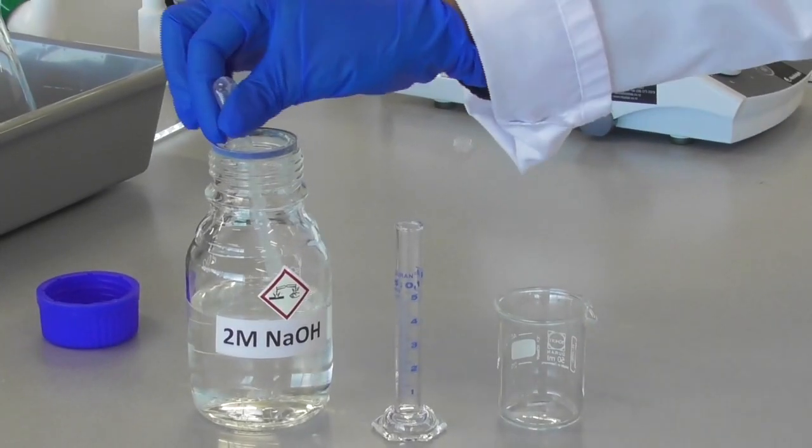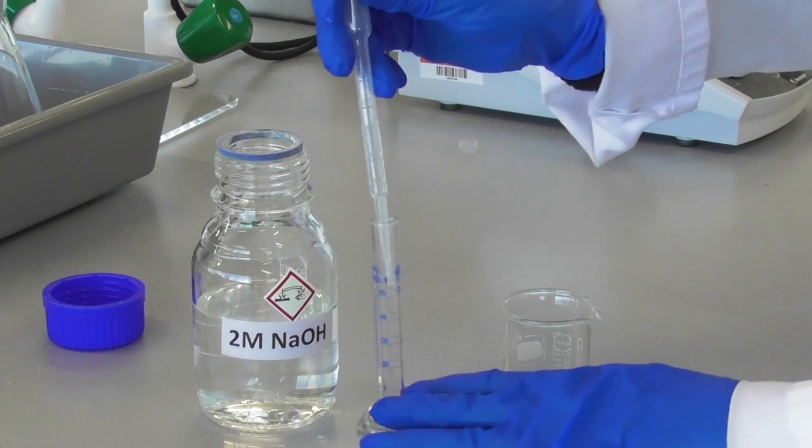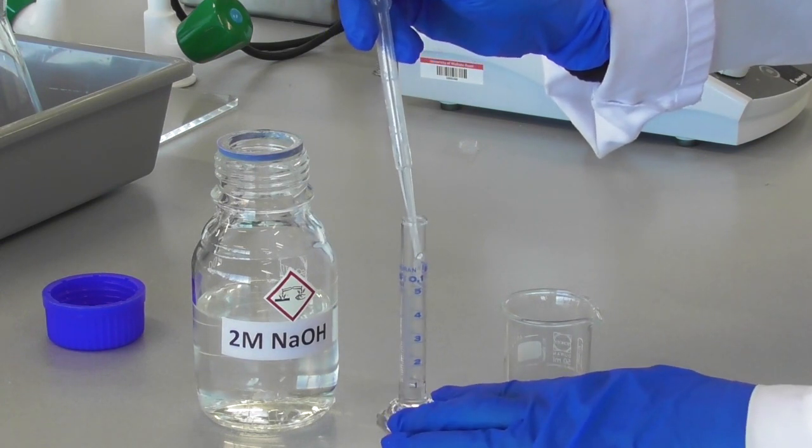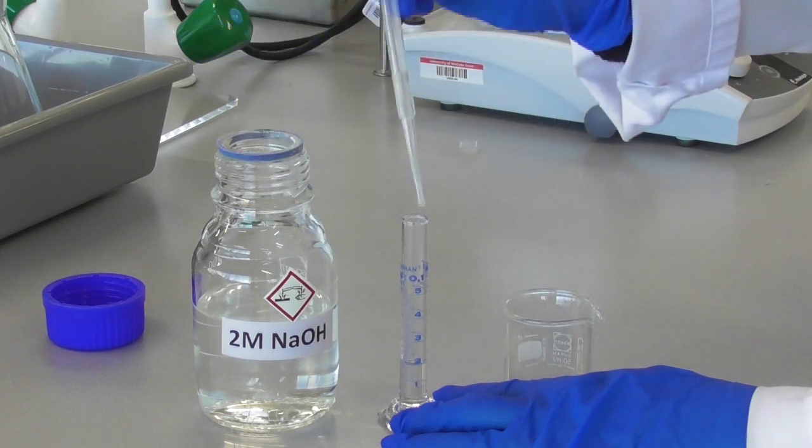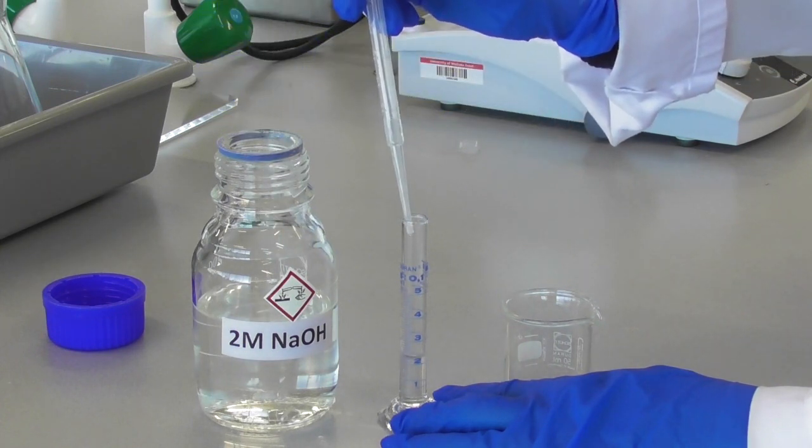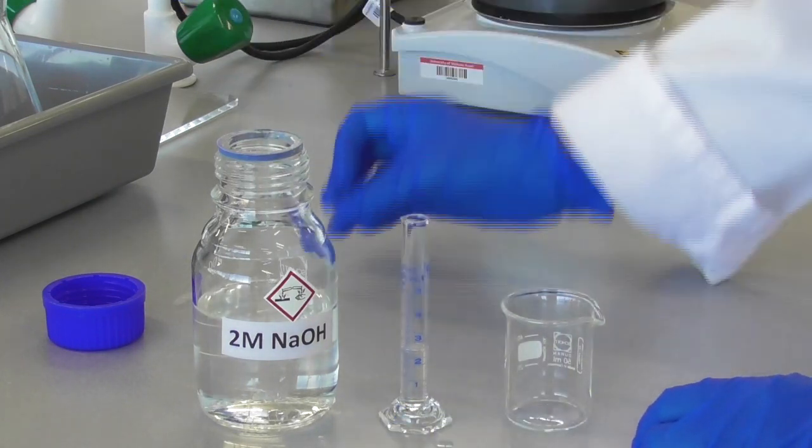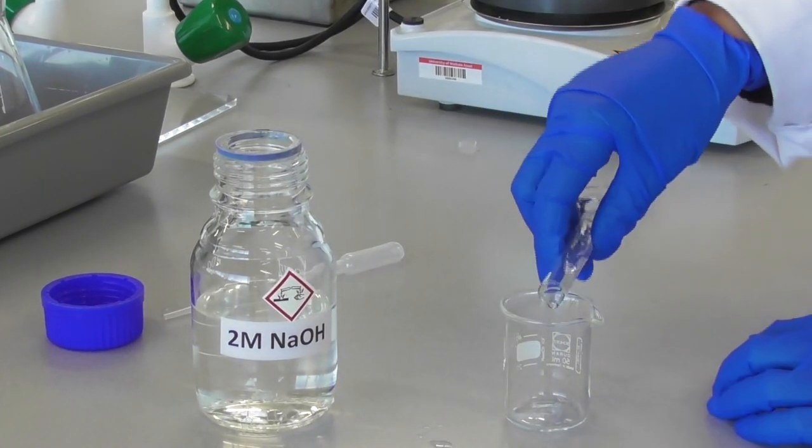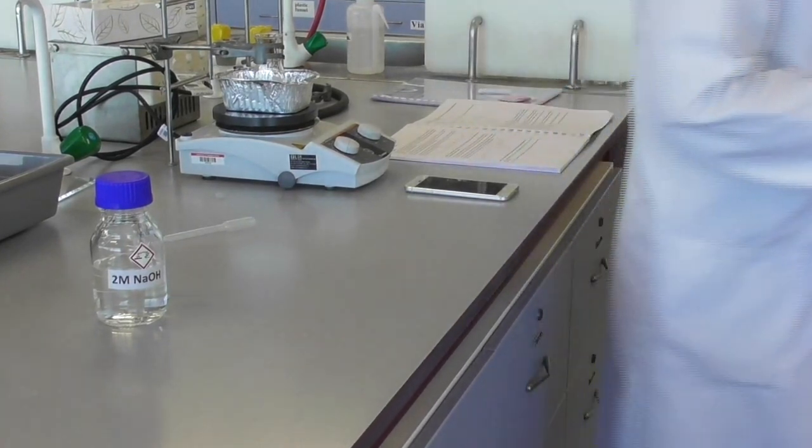I prepare a solution with a second reagent by measuring out 2.5 ml of 2 molar sodium hydroxide solution. I pour the sodium hydroxide solution into a small beaker and take this beaker to the fume hood.